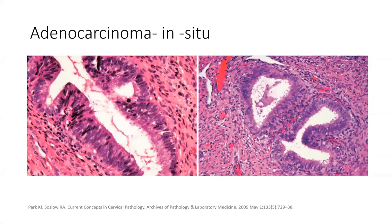Dysplasia of the endocervical glands is called adenocarcinoma in situ (AIS). In comparison to benign endocervical glands with a single layer of bland cells, AIS shows crowding along with reduced intracytoplasmic mucin and nuclei acquiring a more spindle or cigar-shaped appearance. These atypical glands show block positivity for p16 and high Ki-67, which can aid diagnosis in difficult cases or those with limited sample.